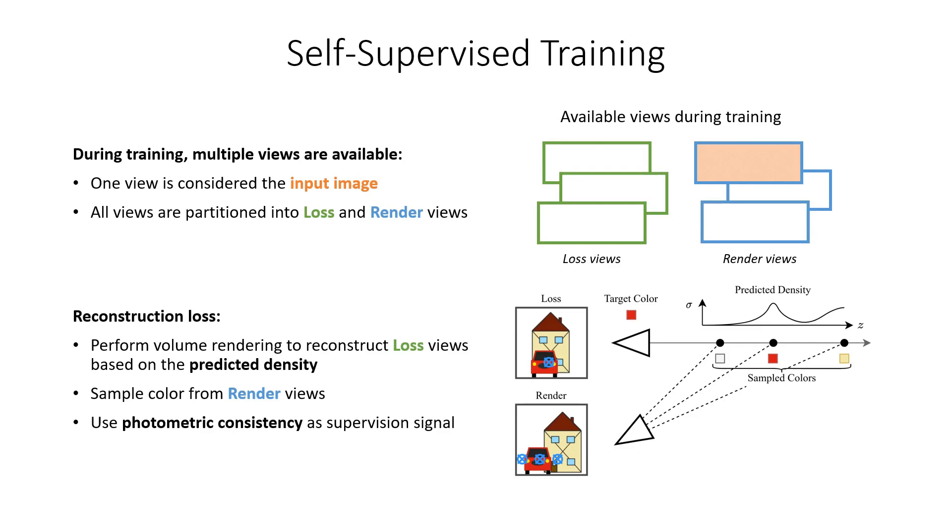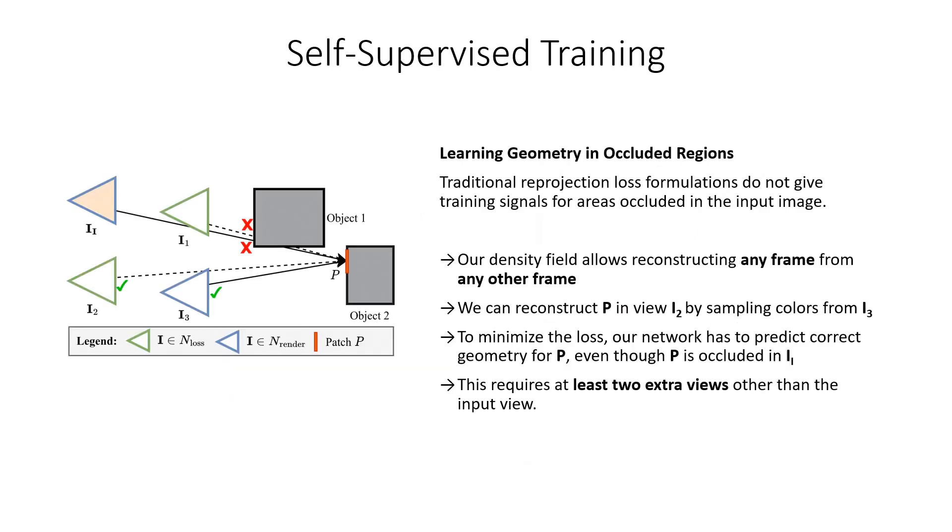The photometric consistency between the reconstructed frames and the frames in the lost partition serves as the supervision signal for the density field. One of our key contributions is that in contrast to previous works, our loss formulation gives supervision signals even in occluded regions. The continuous nature of the density field allows us to reconstruct any frame from any other frame.